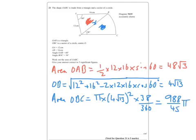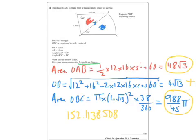Okay, and then I'm going to add these two bits together to get the total area, which is going to give me 152.1138508, which when I round it to the three significant figures it asks me for, gives me 152.